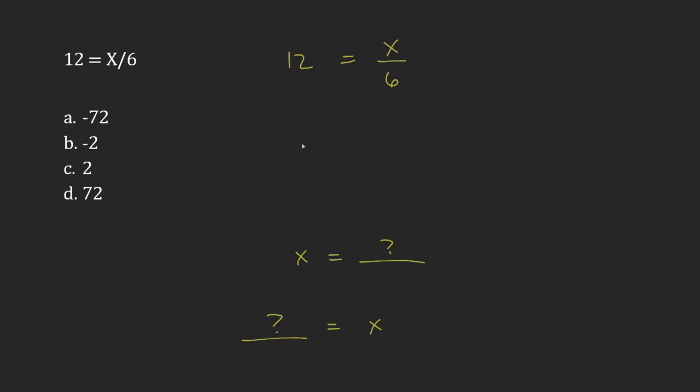Right now I'm dividing by 6, so instead I'm going to multiply by 6, do this to both sides, and these will cancel.